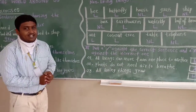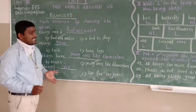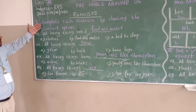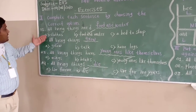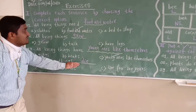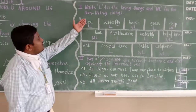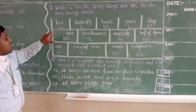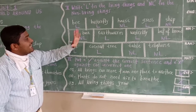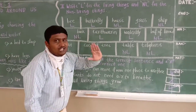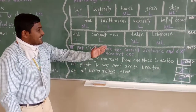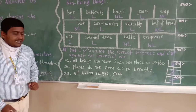Once again I recall: we have solved all three exercise questions. First, complete the sentence by choosing the correct options — food and water, grow, ones like themselves, die. Second, classify items in the box into living things and non-living things. Third, put a tick against the correct sentence and a cross against the incorrect one.